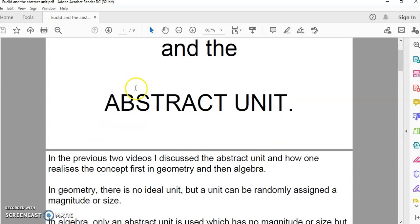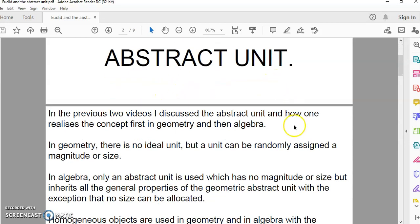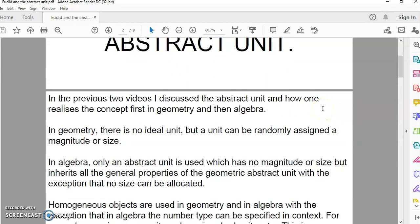We saw how the concept of unit is realized in geometry and then in algebra. Algebra inherits all the properties from the magnitude concept in geometry, which then becomes the number concept through the abstract unit.